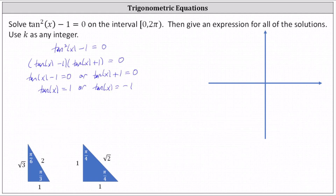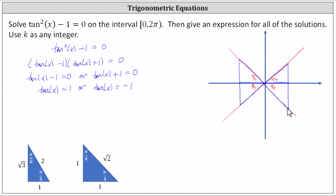We sketch a reference angle of pi over four in each of the four quadrants, draw the corresponding reference triangles, and label the sides. In the first quadrant, both x and y are positive, so both legs are positive one, hypotenuse square root two. In the second quadrant, x is negative and y is positive, so the legs are negative one and positive one, hypotenuse square root two. In the third quadrant, both x and y are negative, so both legs are negative one, hypotenuse square root two. In the fourth quadrant, x is positive and y is negative, so this leg is negative one, hypotenuse square root two. Notice that in the first and third quadrants the tangent value is positive one, and in the second and fourth quadrants the tangent value is negative one.